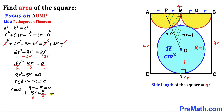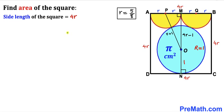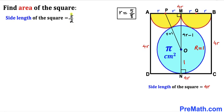This gives r equals 0 or 8r − 5 equals 0. Solving the second equation: 8r equals 5, so r equals 5 divided by 8. Since r equals 0 is not feasible, we accept r equals 5/8. The side length of square ABCD is 4 times r, so substituting r = 5/8 gives side length equals 4 × (5/8), which simplifies to 5/2.